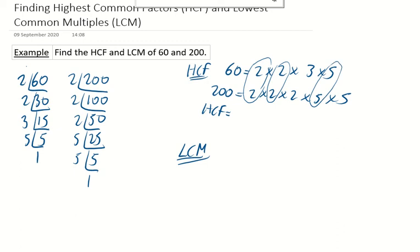Then your highest common factor is you read along one of these rows. Either one doesn't matter. And you read whatever is in the rings. So I've got a 2, a 2 and a 5. Had I read along the other 200 I would have had 2, 2 and 5 as well. So my HCF is 2 times 2 times 5. 2 times 2 is 4 and then 4 times 5 gives you 20.